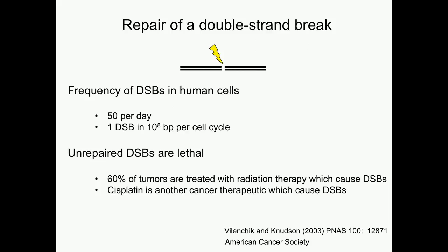Our lab is focused on the repair of double-strand breaks, which is one of the most lethal types of DNA damage. Every day, our cells repair 50 natural double-strand breaks, which correlates to a frequency of one double-strand break per 10 to the eighth base pairs per cell cycle. Unrepaired double-strand breaks are lethal, and some of the most common cancer therapeutics rely on irreparable double-strand breaks to mediate cell death.